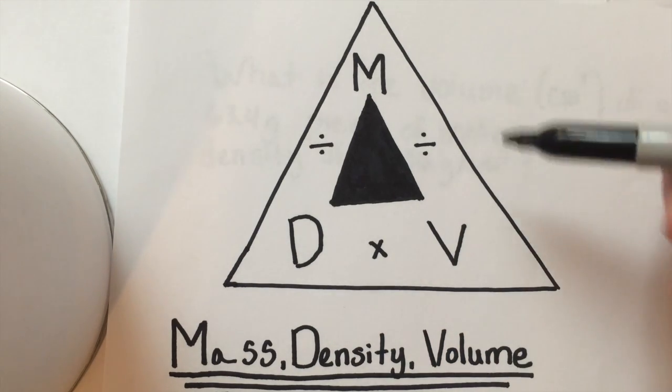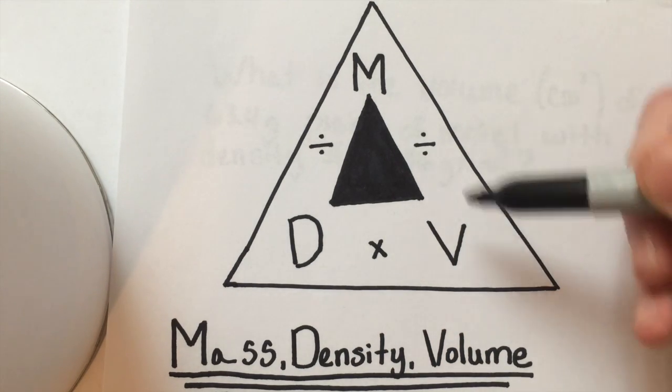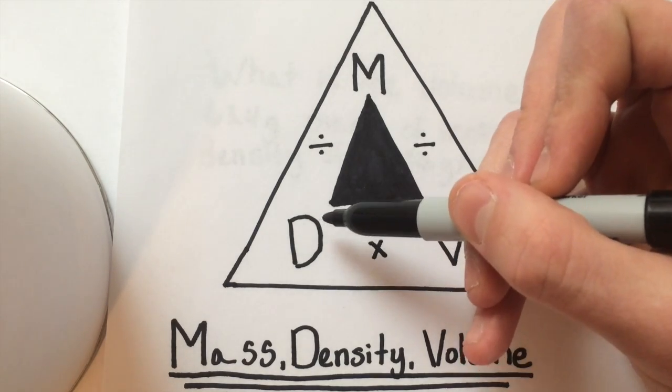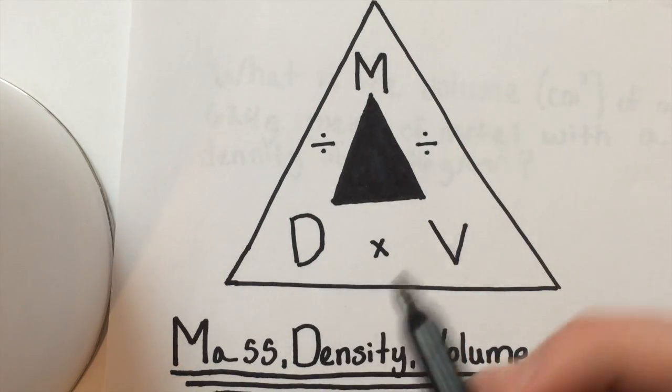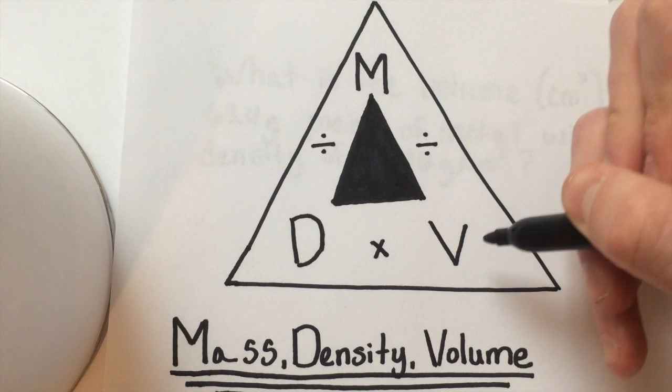If we're looking for volume, we are left with mass over density. And if we're looking for density, we are left with mass over volume.